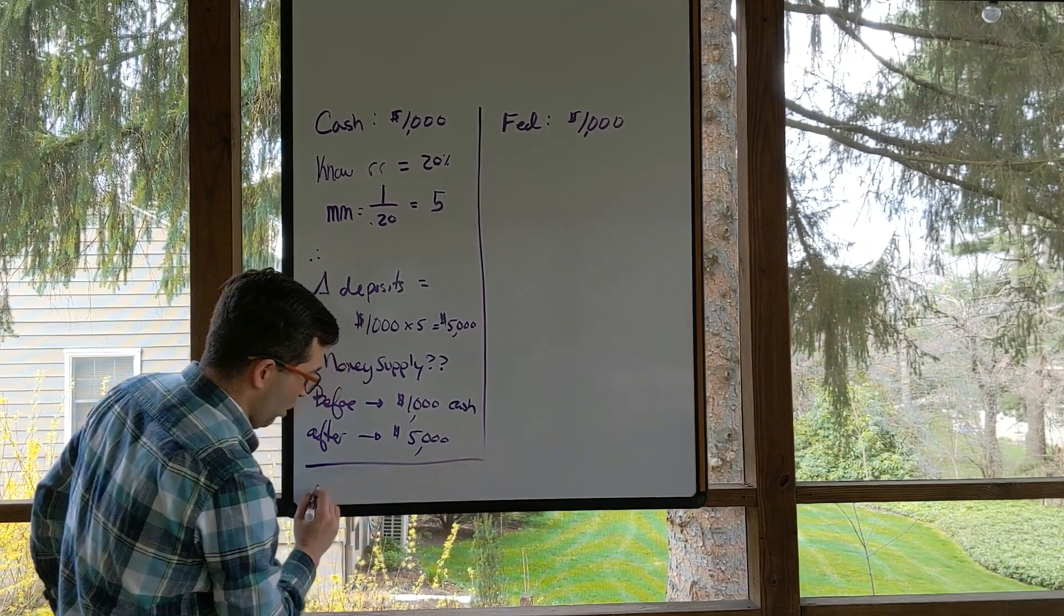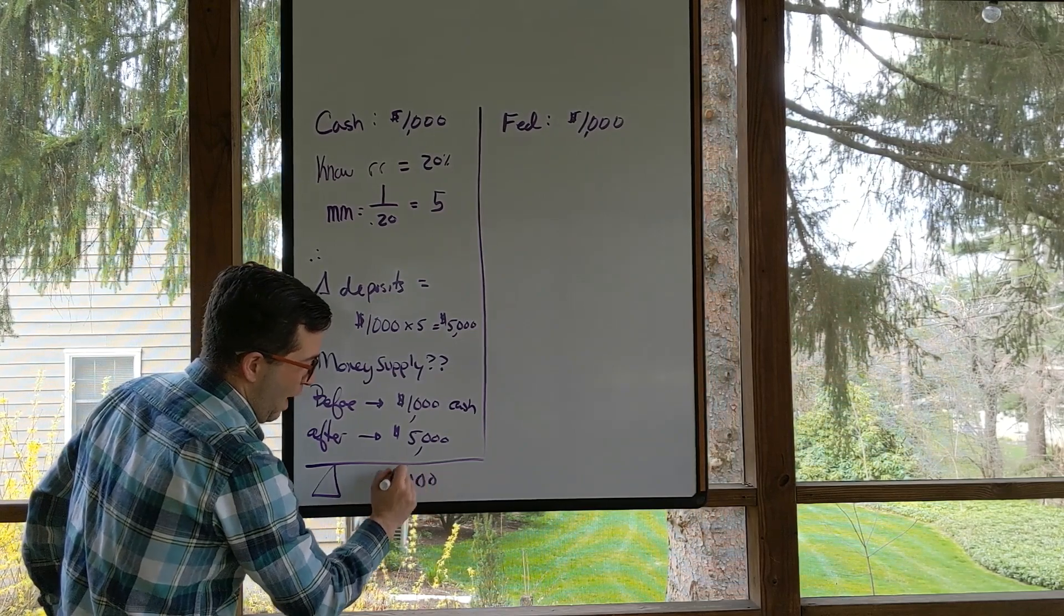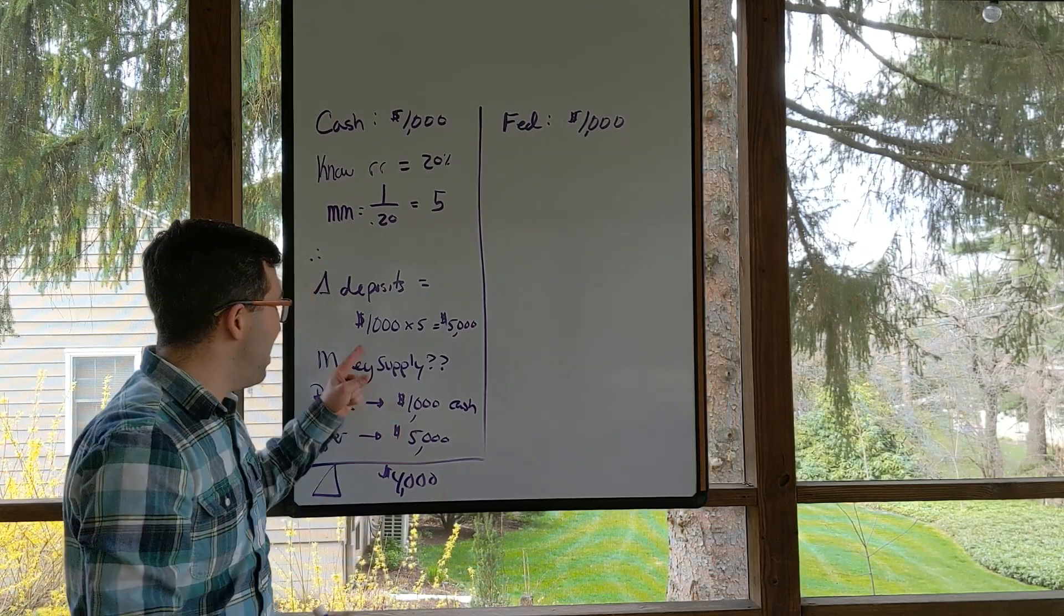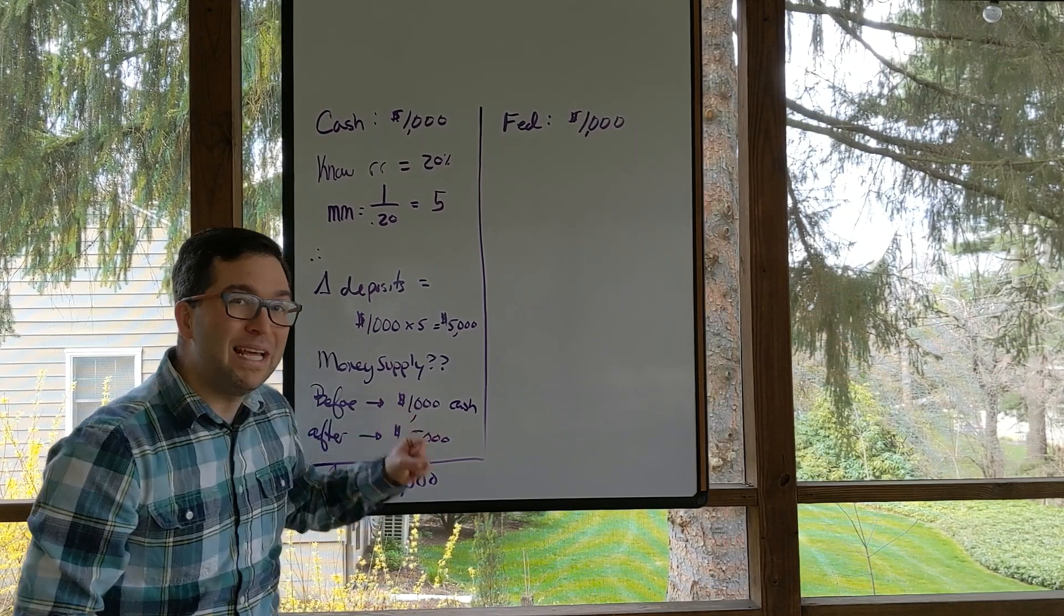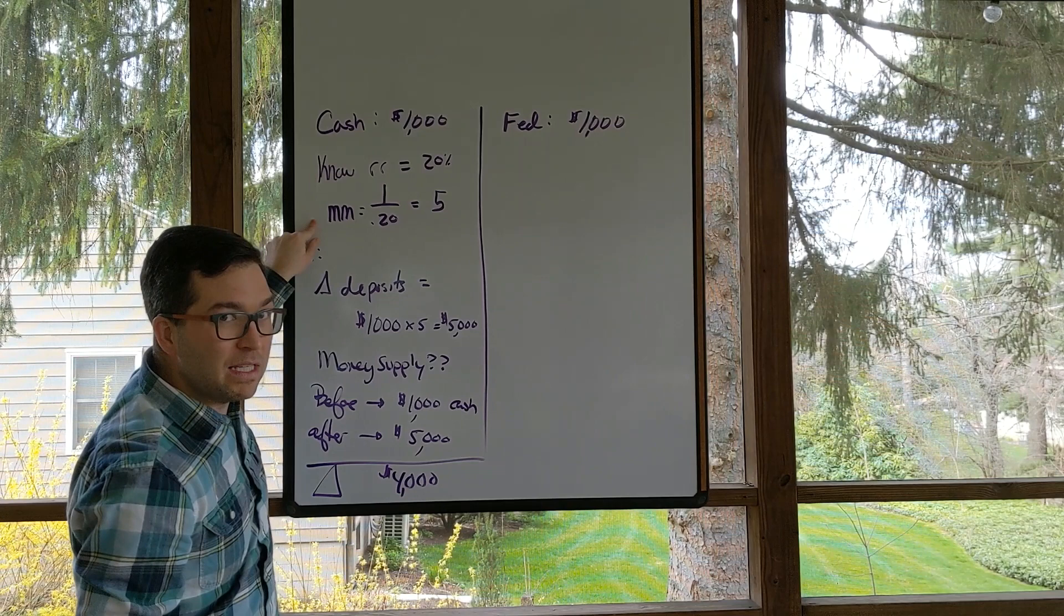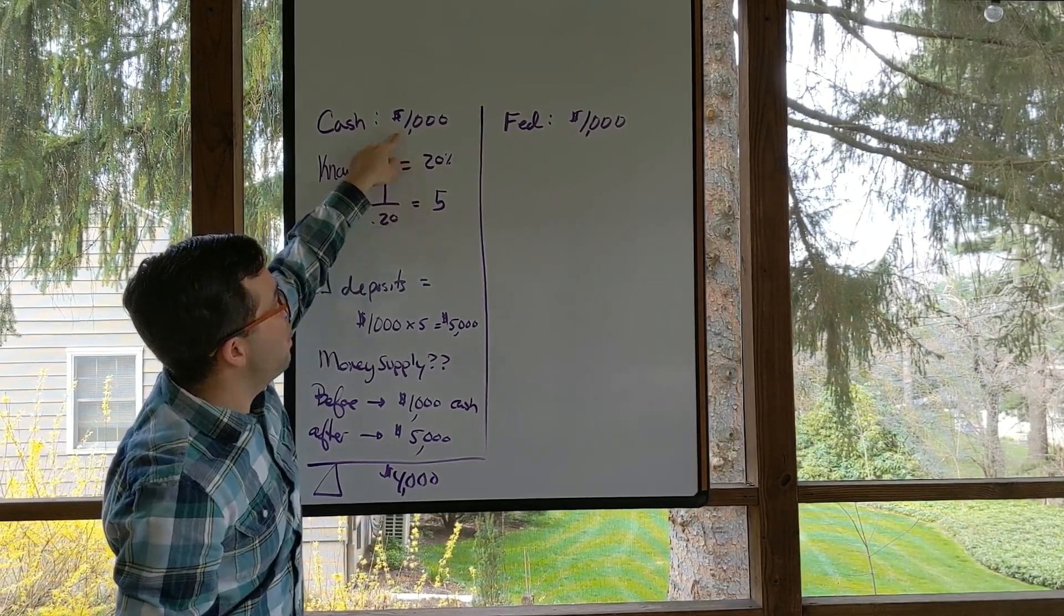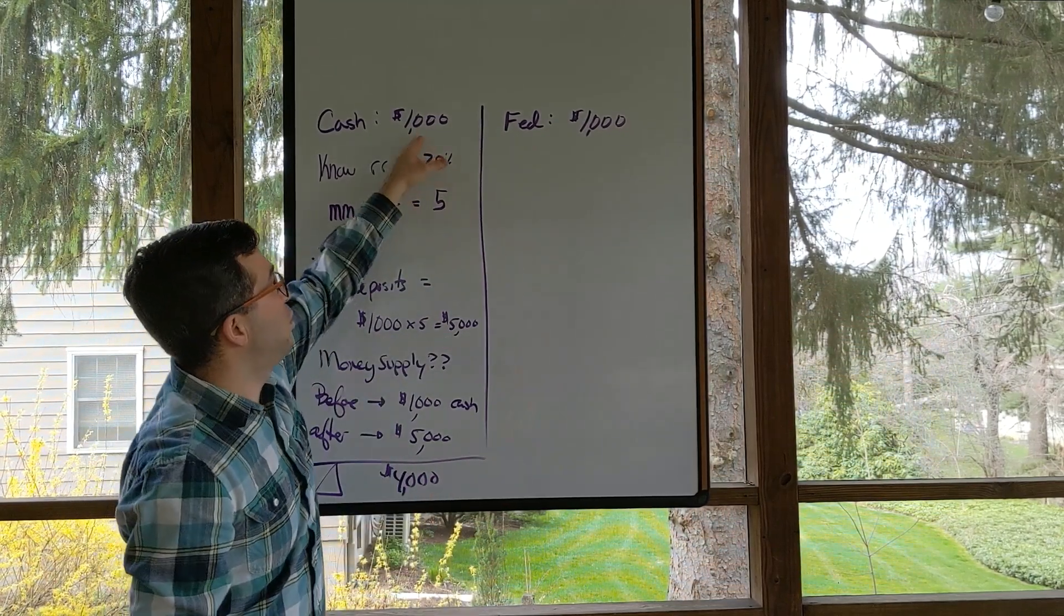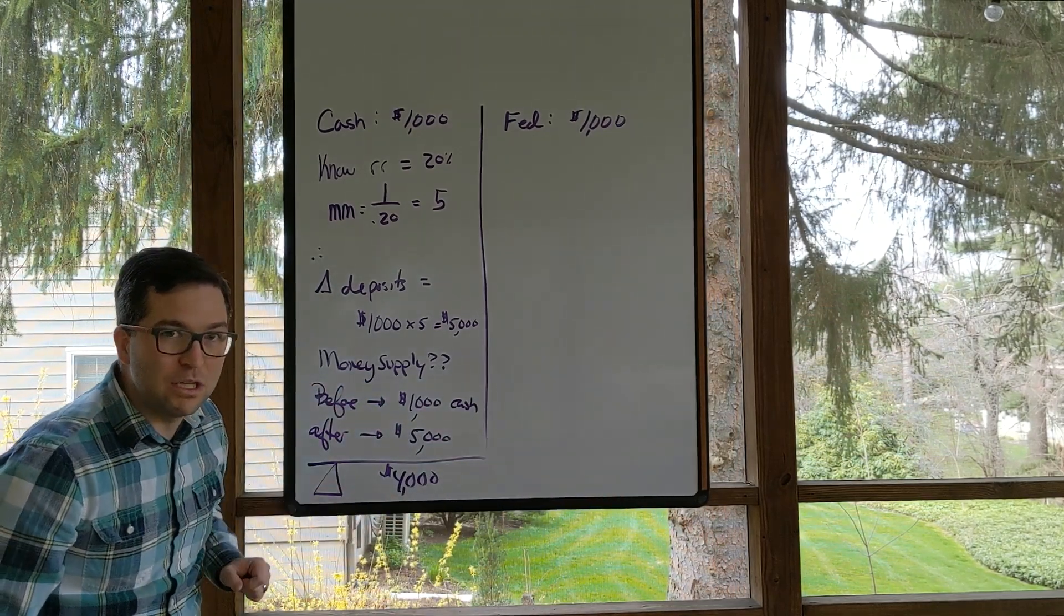So the overall change has to be $4,000. If the initial deposit comes from within the money supply already, you need to make sure that you take it out so you're not double counting. We know that the simple deposit multiplier is telling us that this is going to get multiplied by five. So this $1,000 cash deposit will change deposits by 5,000. But this 1,000 was already there. So that's why it's a $4,000 change in the money supply.